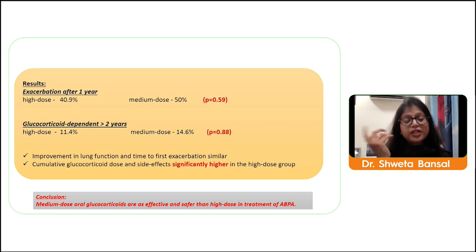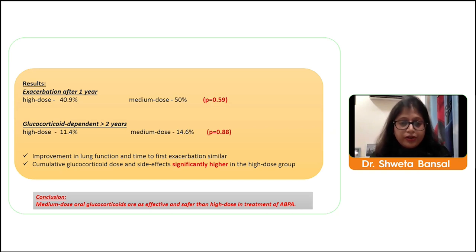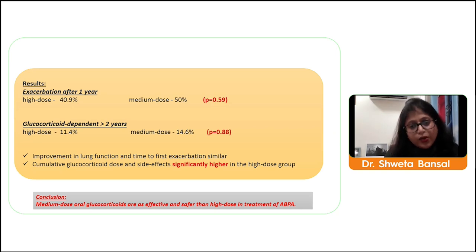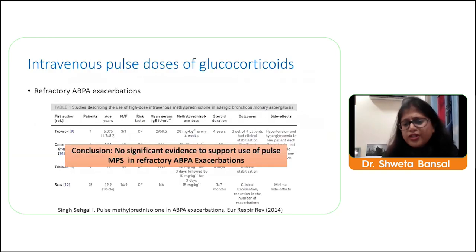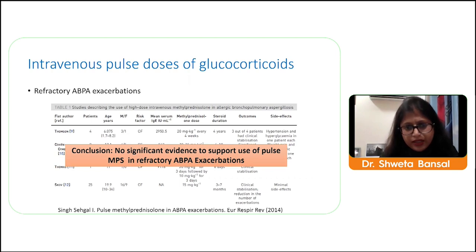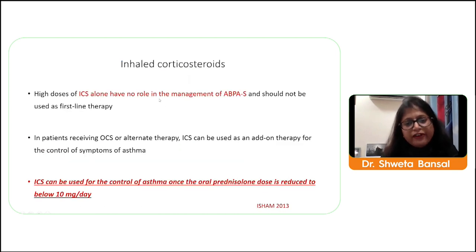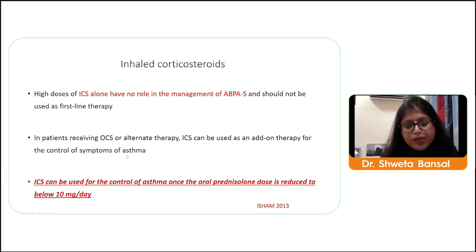Intravenous pulse steroids have limited evidence except in refractory ABPA exacerbation. Inhaled corticosteroids have no role as upfront first-line therapy for ABPA, but as add-on therapy for symptom control in asthma they should be used. Antifungals reduce antigenic response and decrease glucocorticoid need — they decrease sputum eosinophils, IgE/IgG levels, and exacerbations.